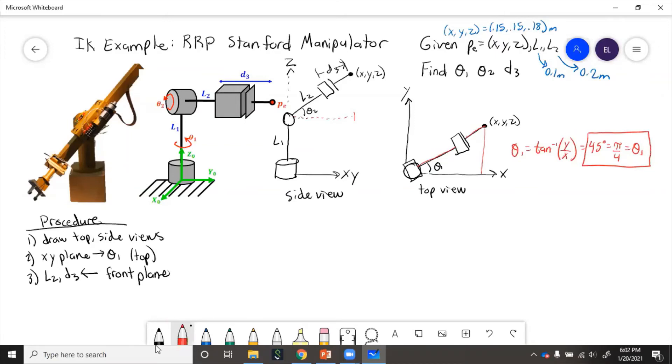Now to get theta2, things get a little bit more complicated. Let's call this distance here r. Now this distance, we'll call that s. If we want to get theta2, we can use inverse tangent of s and r.